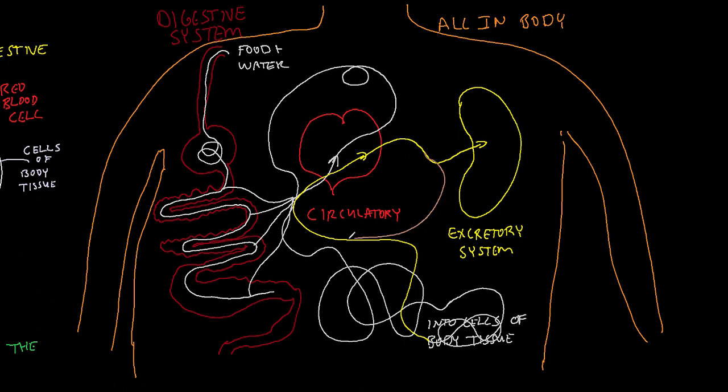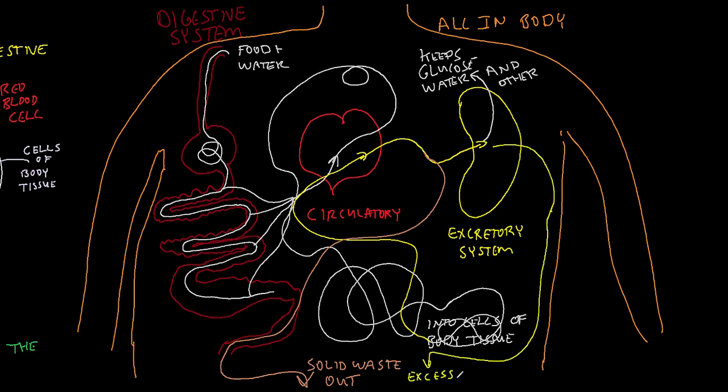Those molecules are taken and you're either getting rid of solid waste through your bowels or you are getting rid of molecules as a part of the liquid waste in your urine. That's getting filtered through the kidneys. So we're going to focus on the kidneys here. This blood runs through the kidney and it's like a big filter. Your body is trying to keep the things that it needs.